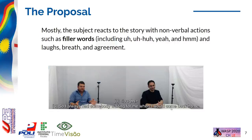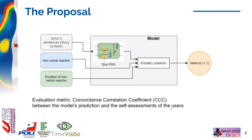So, our proposal is to evaluate empathy during these non-verbal reactions, and our proposed model comprises two steps. First, an RNN model is fed with the actor's sentence and generates an overall feature map, and then we use this feature map with the sequence length and the previous conversation feature map with an empathy predictor trained with the OMG Emotion data.